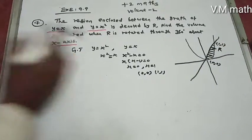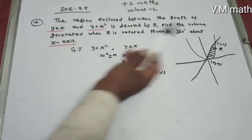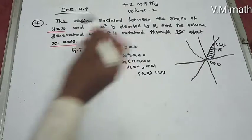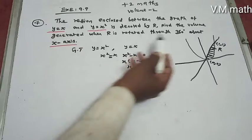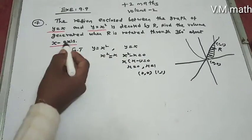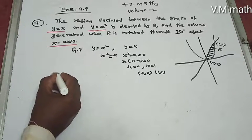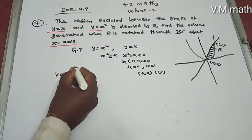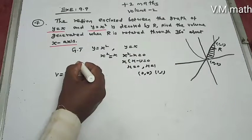It is rotating about the x-axis. So volume V equals π times the integral from limit 0 to 1.